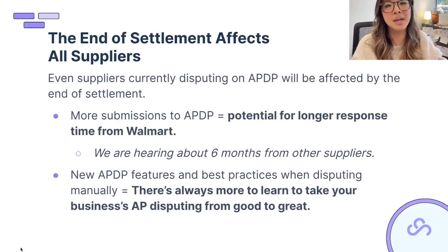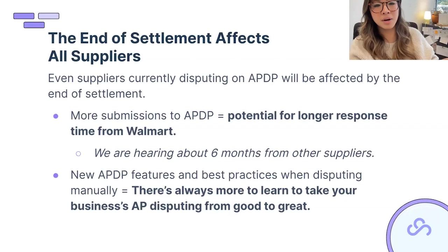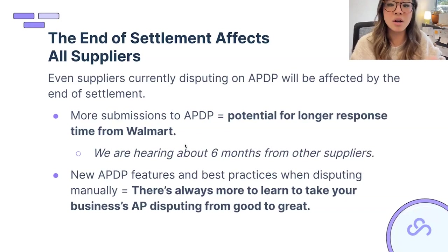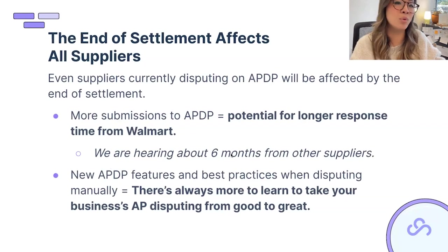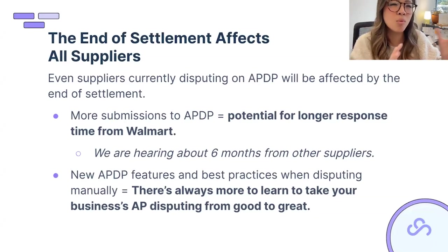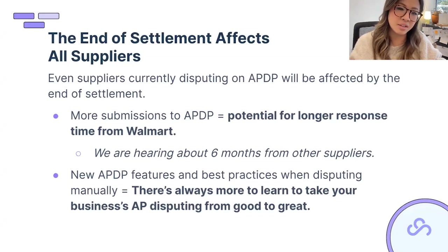Even if you weren't on settlement, there's a larger issue: now that large companies like P&G and Unilever are submitting tens of thousands of individual disputes a week, Walmart and the Gen Pact team reviewing claims are completely overwhelmed. We are seeing longer response times — we've heard from suppliers with claims at least six months old, and some open as far back as November 2022. There doesn't seem to be a clear order in which Walmart is tackling them.